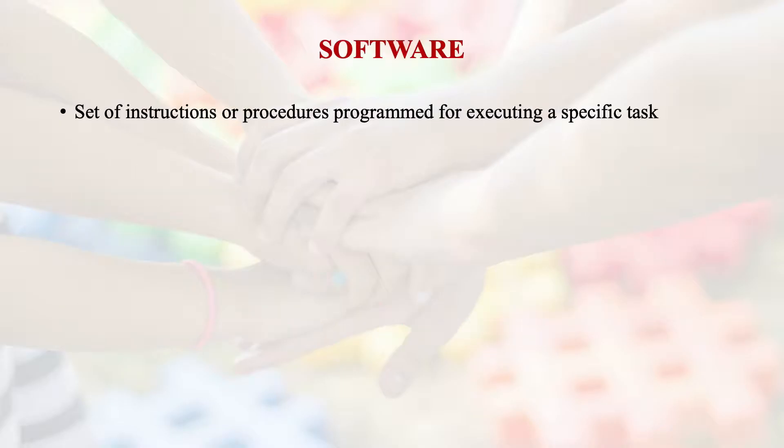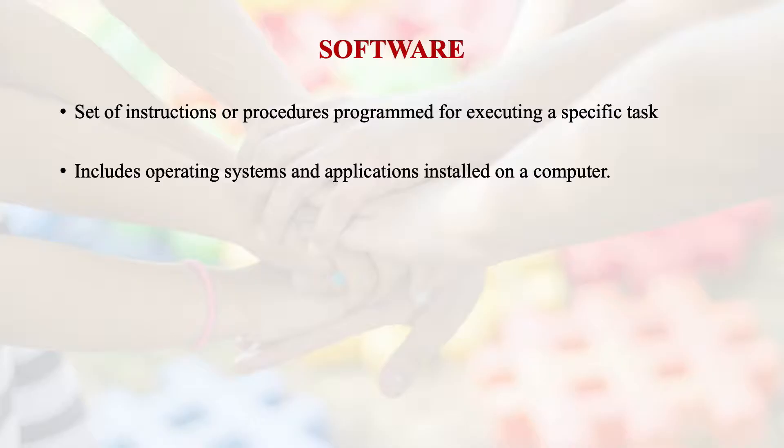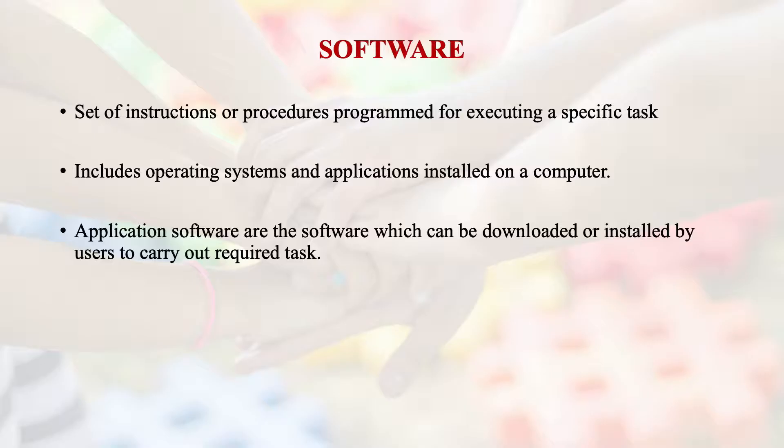What is software? It is a set of instructions or procedures programmed for executing a specific task. This includes operating systems like Android and iOS, and applications which are installed on a computer or any kind of device. Application software — apps — can be downloaded or installed by users to carry out required tasks. In social media we have been using lots of apps, and during COVID time the Government of India started the Aarogya Setu app. Similarly, now that vaccination is coming, there will be a different app for registration.